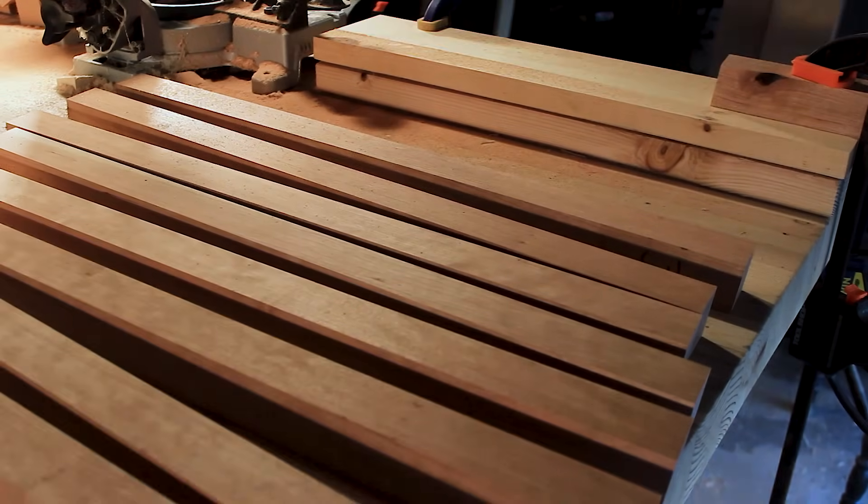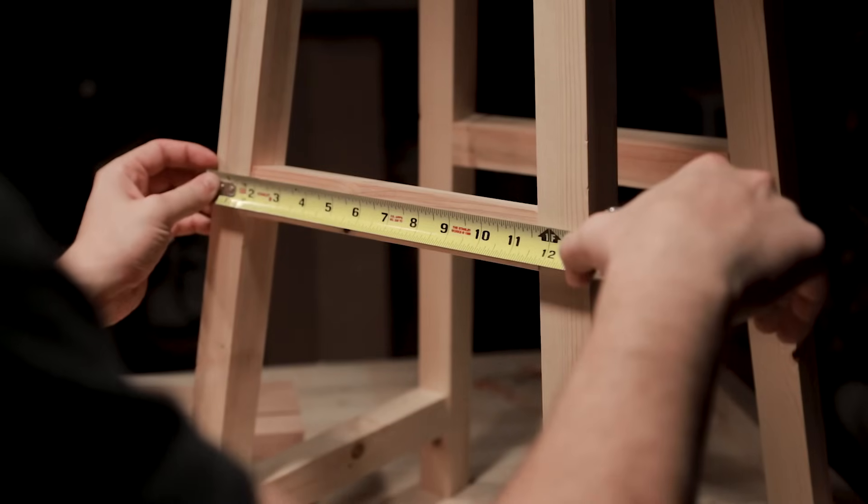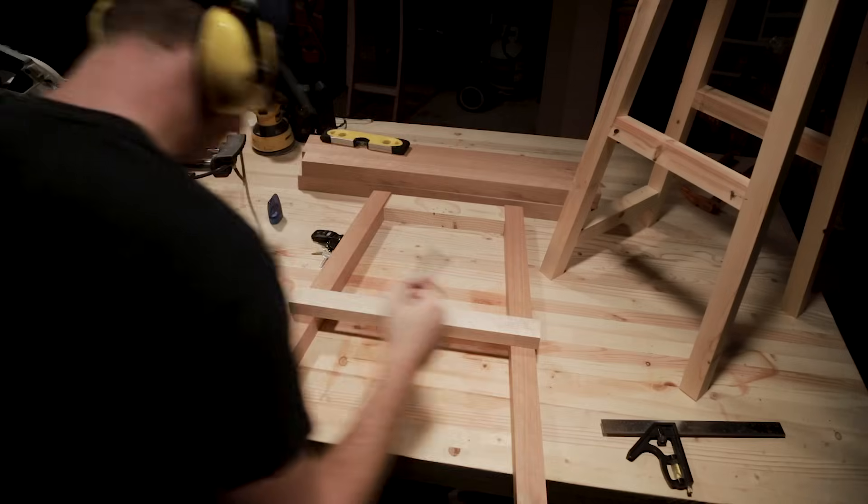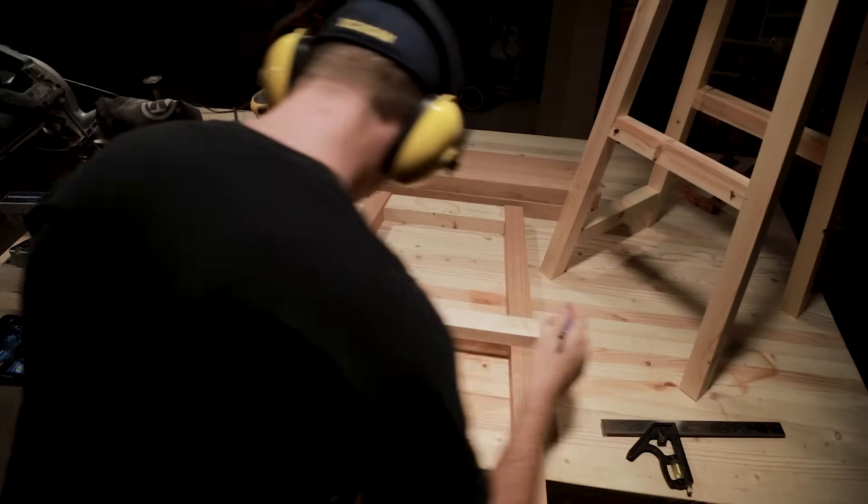To figure out where I wanted the cross bars I made a mock up out of scrap pine so I know they are in a comfortable spot for my feet. This also showed me how long to cut the cross bars. I figured out where to place them and I started to mark for the mortise and tenons.